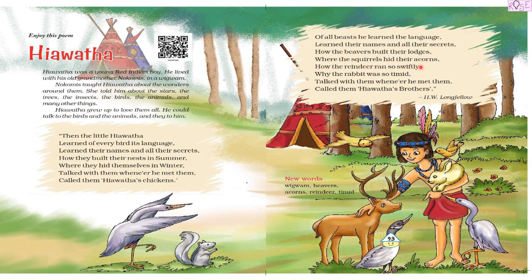Of all beasts he learned the language, learned their names and all their secrets — how the beavers built the lodges, where the squirrels hid their acorns, how the reindeer ran so swiftly, why the rabbit was so timid. He talked with them whenever he met them and called them Hiawatha's brothers. Now we know everything about Hiawatha — how fond he was of all the birds and animals, giving them nicknames and sharing their secrets.